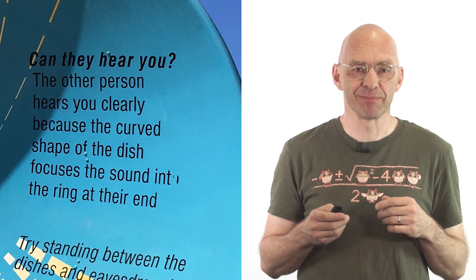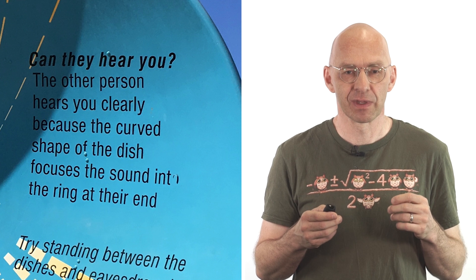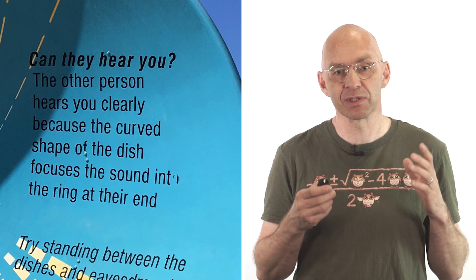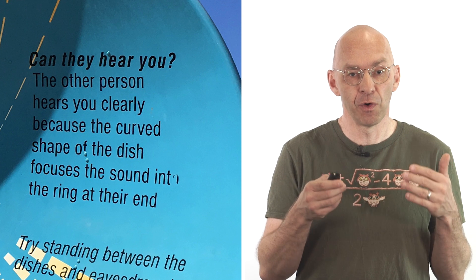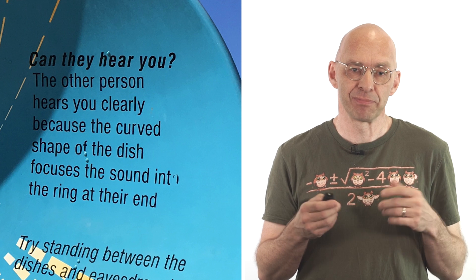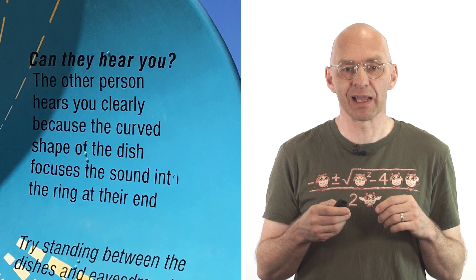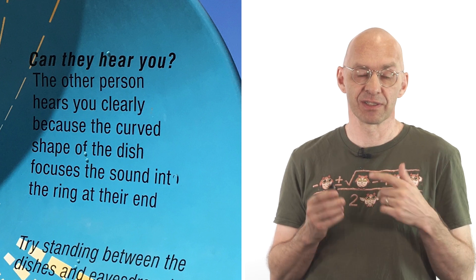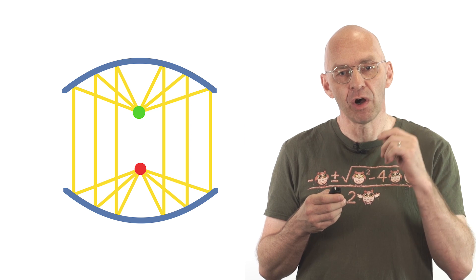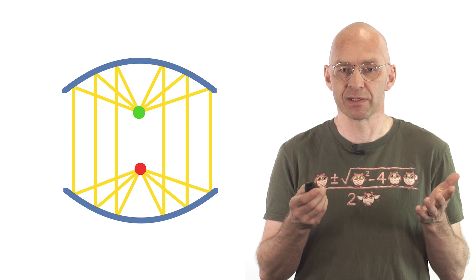It's a great experiment but what's not so great is the explanation on the whispering dish. What it says there is the other person hears you clearly because the curved shape of the dish focuses the sound into the ring at their end. Pretty damn nothing-y, isn't it? Well, most science museums try a little harder and at least feature this suggestive drawing here. But there is one very obvious question about this effect and it's a question that is seldom asked.